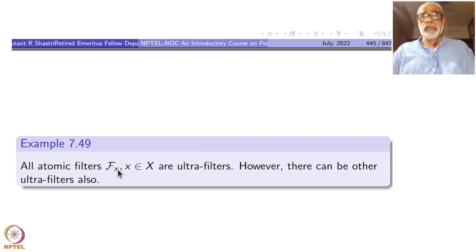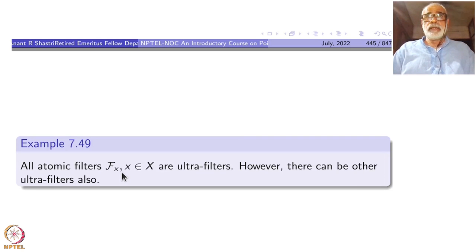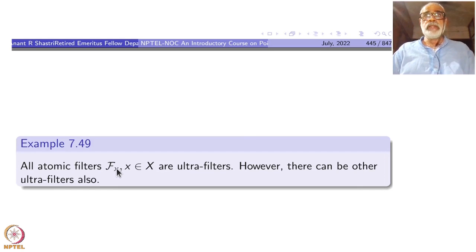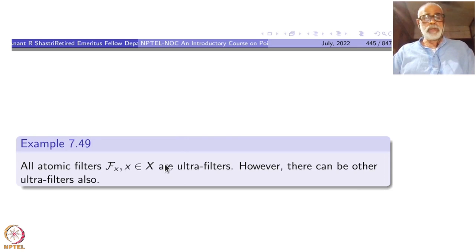Remember, F_x means all subsets of X which contain the little x. If you add one more element that does not contain little x, then the singleton {x} intersected with that member will be empty — that is not allowed. Therefore, F_x is maximal. These atomic filters play an important role.